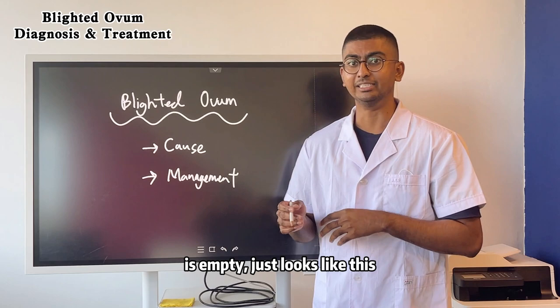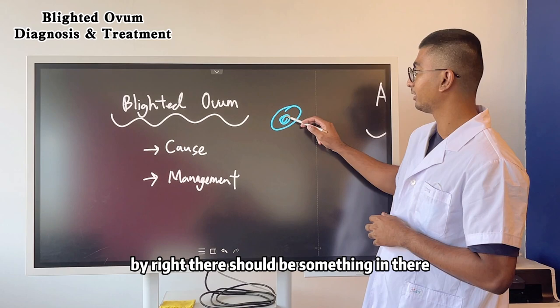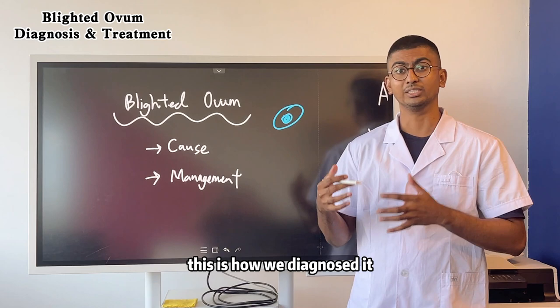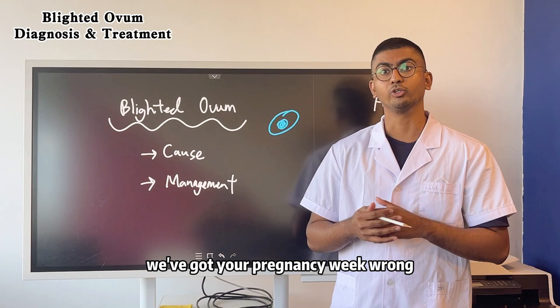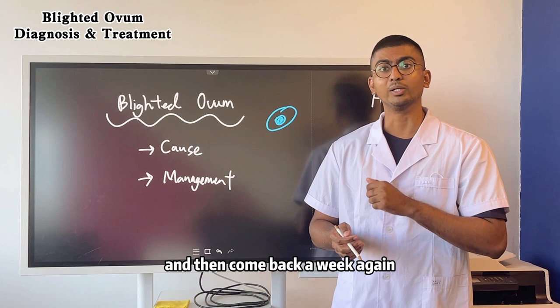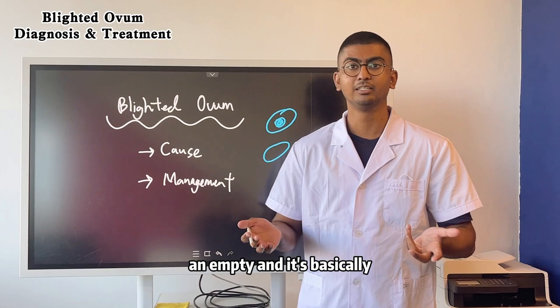By right, there should be something in there — the embryo, the fetal pole. But this is how we diagnose it: by looking at an empty gestational sac. Sometimes we tell patients to come back a week or two later, because maybe we have the pregnancy week wrong and it's far too early. We check again, and if we still see an empty sac, then it's confirmed to be a blighted ovum.